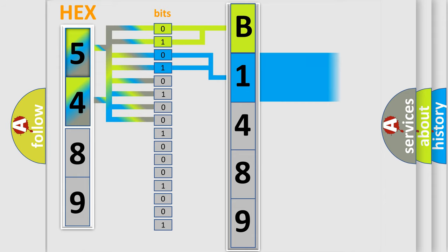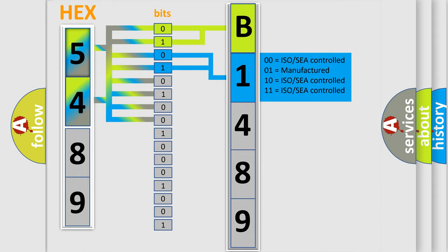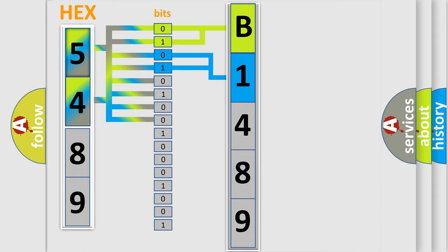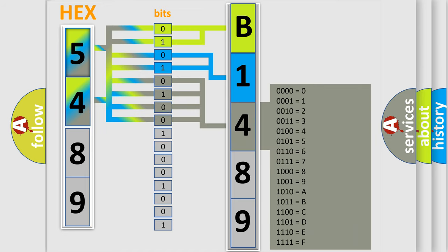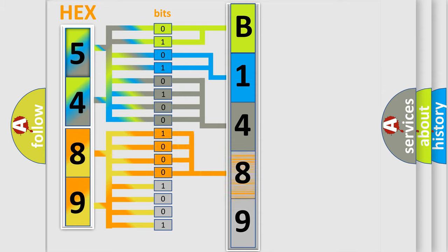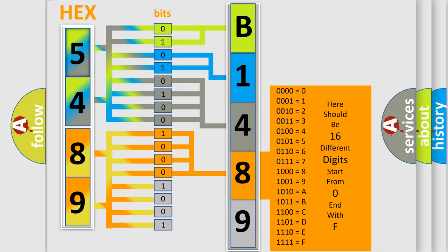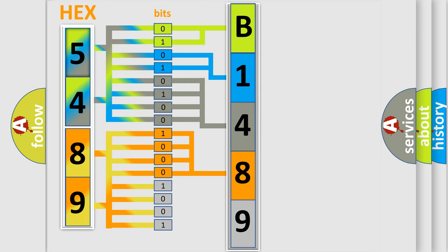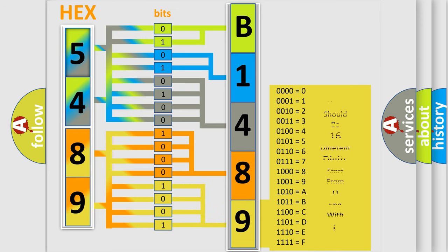The next two bits determine the second character. The last four bits of the first byte define the third character of the code. The second byte is composed of a combination of eight bits. The first four bits determine the fourth character of the code, and the combination of the last four bits defines the fifth character. A single byte conceals 256 possible combinations.